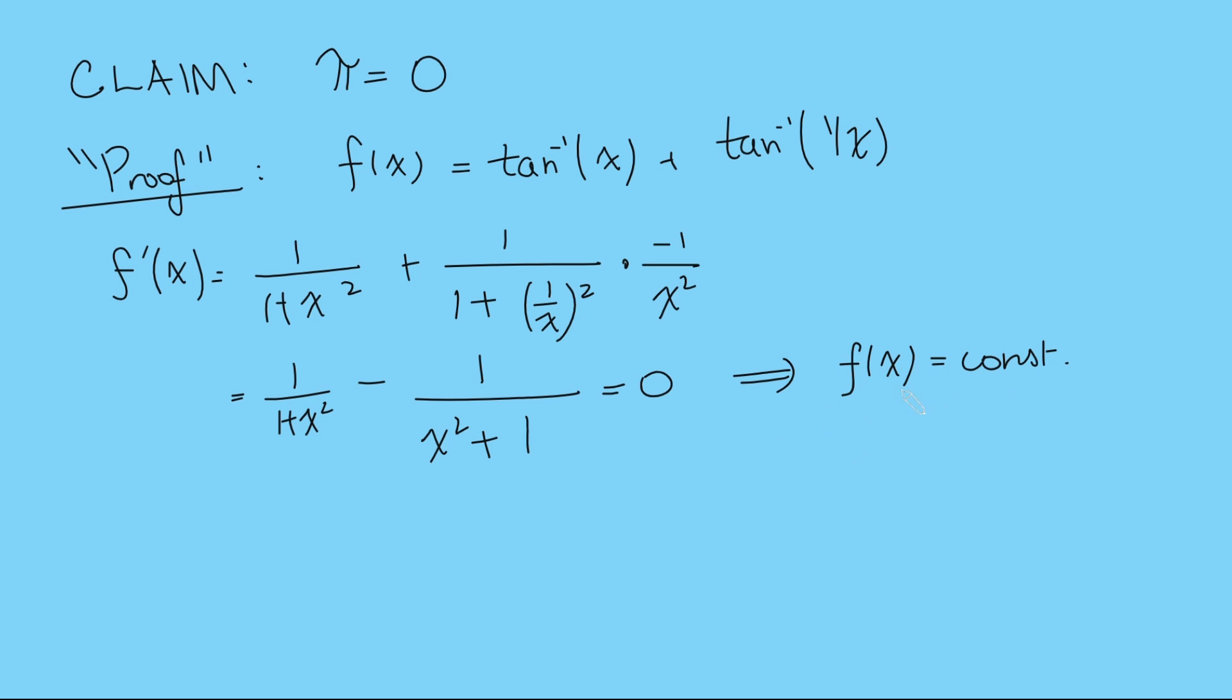How can we work out that constant value? Well, we can just plug in a value of x, so I'm going to plug in x is 1. If I plug that in, I get inverse tan of 1, which is pi over 4, plus inverse tan of 1 again, so that's pi over 4 again, and that's pi over 2.